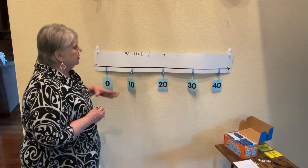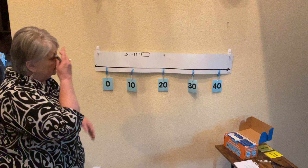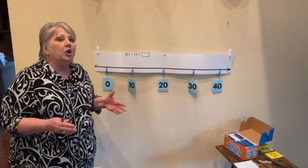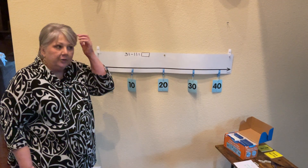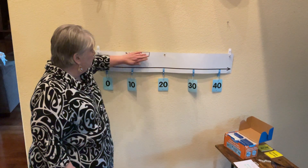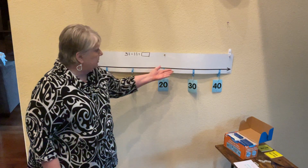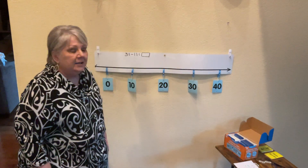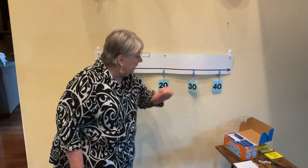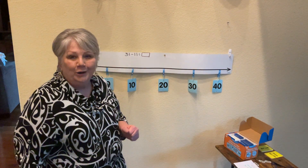The first thing we want to do is start at 31. This is a good opportunity to think about where 31 even goes on this number line. Another activity you could spend a whole lot of time on before you even get into adding and subtracting is just placing numbers on number lines. So if this was a number line in increments of 10, where would 31 go?